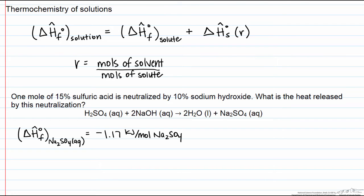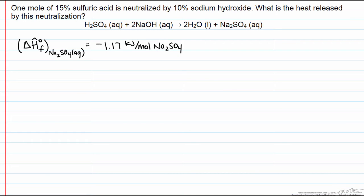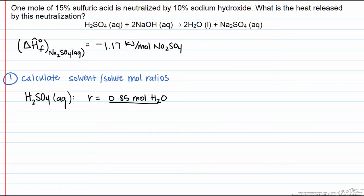This involves solving for R so we can look them up. If we look at our H2SO4 aqueous solution, in one mole there is 0.85 moles of water and 0.15 moles of sulfuric acid, so our R equals 5.7.